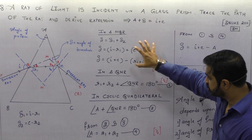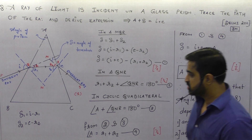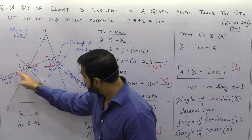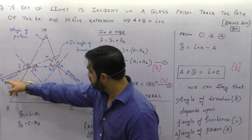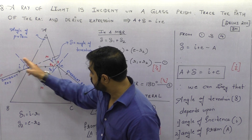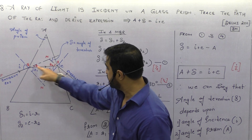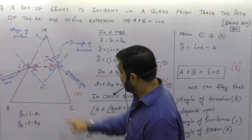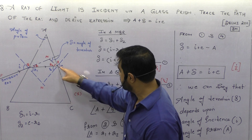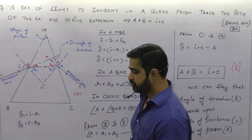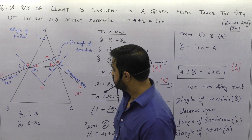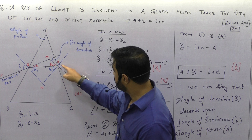This is the glass prism. A ray of light is incident on it — let the incident ray be named PQ. When a ray of light goes from rarer to denser medium, it bends, that is, it gets refracted. From denser to rarer medium, it bends away from the normal, and this ray is termed the emergent ray. The angle with the normal is angle of incidence; this angle with the normal is angle of emergence.